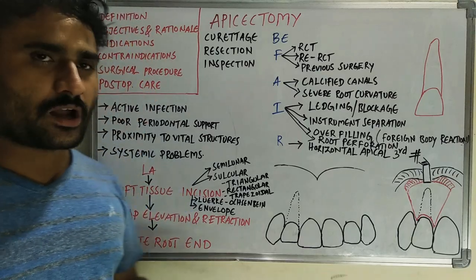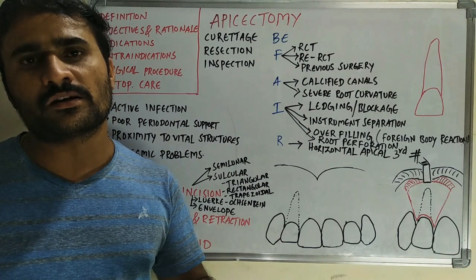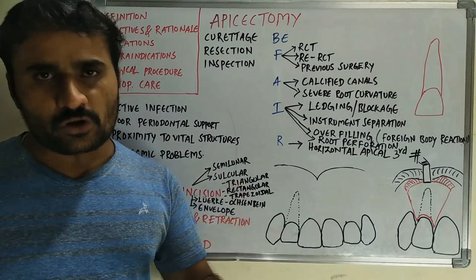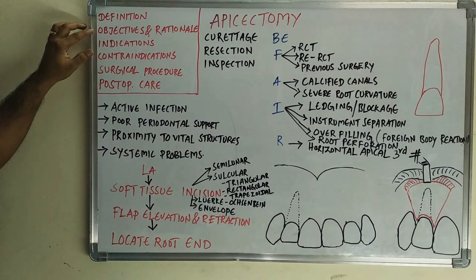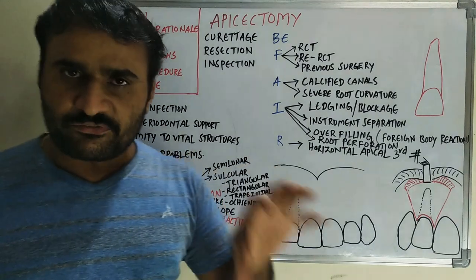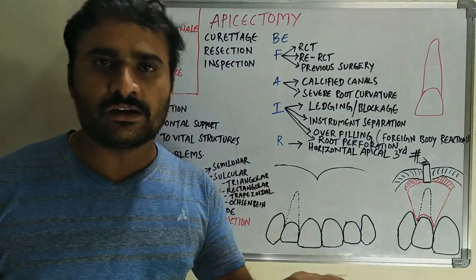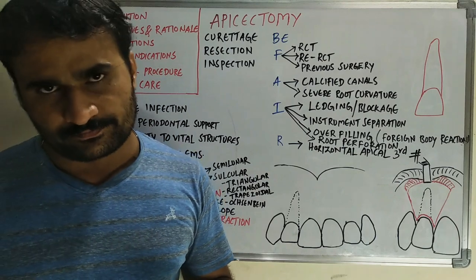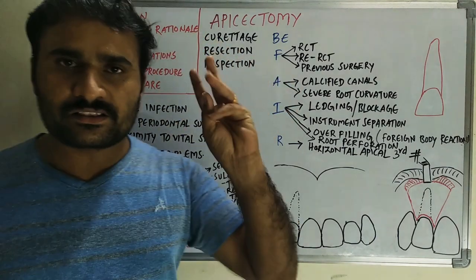In this video we will discuss apicectomy, one of the most important questions in endodontics, surgery, or pedodontics. We have to cover the definition, objectives and rationale, indications, contraindications, surgical procedure, and post-operative care. By definition, apicectomy is the surgical amputation or removal of the apex of a tooth root.